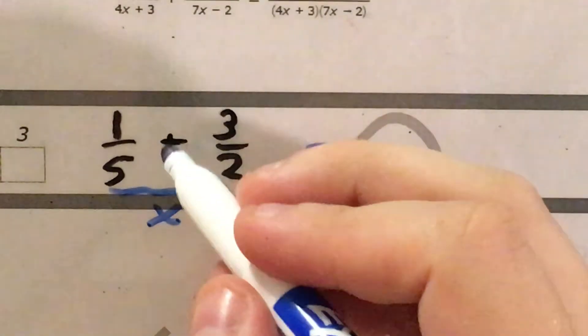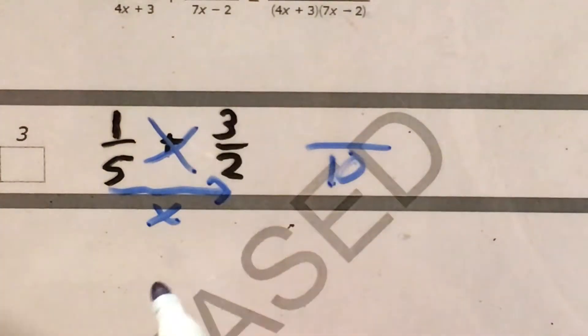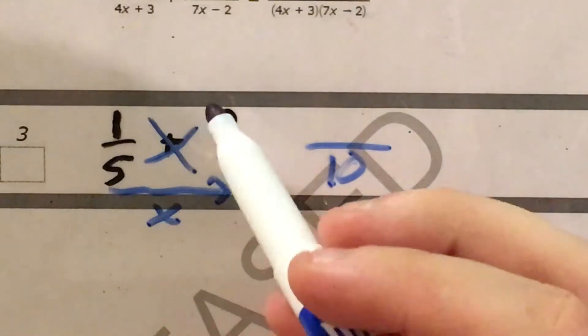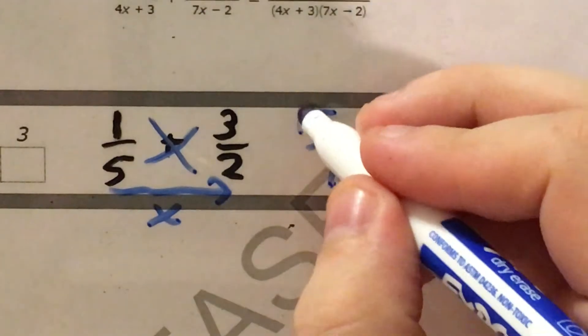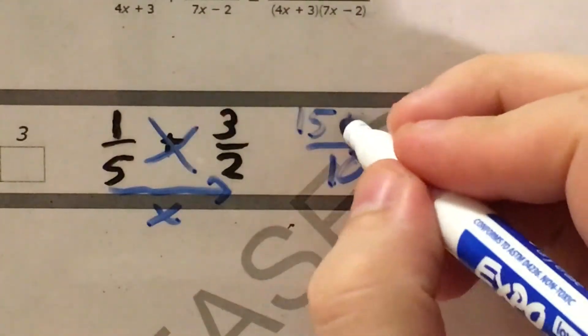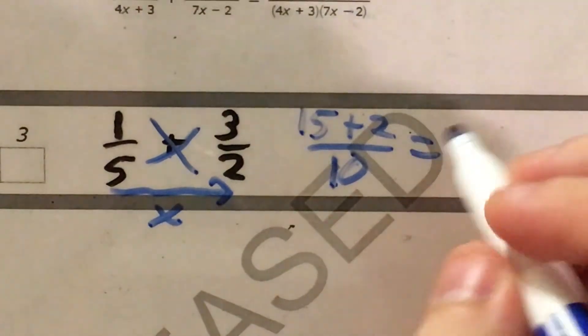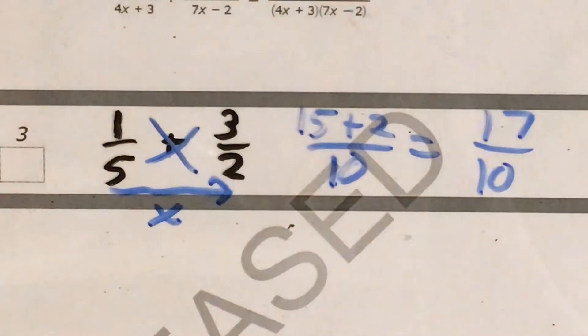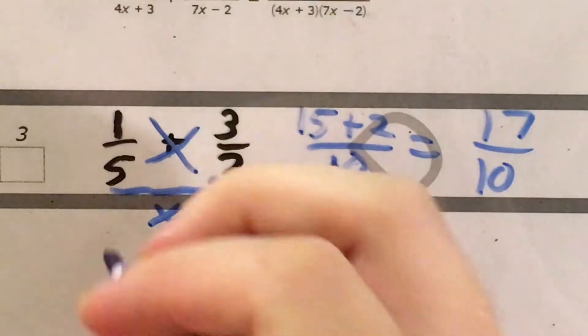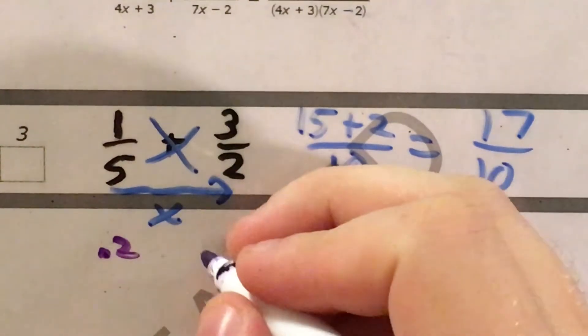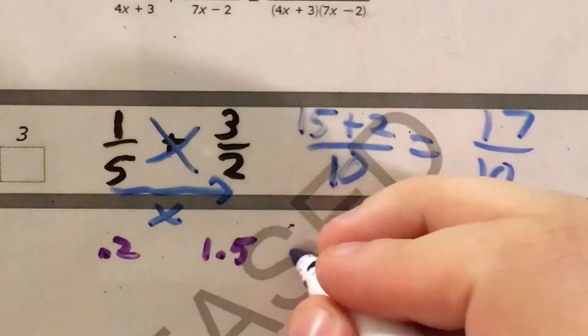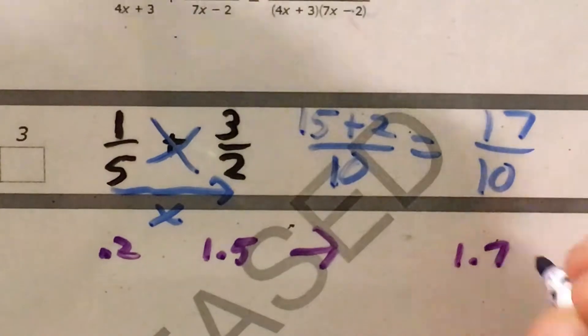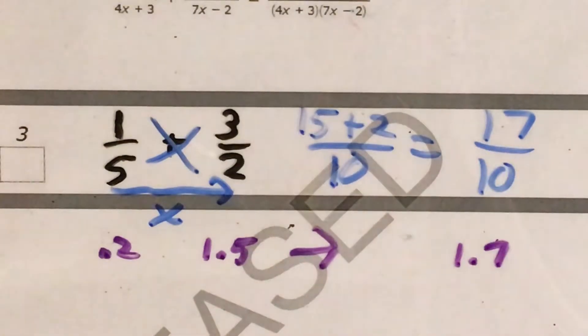And now to get my numerator, I'm actually going to cross-multiply and add. So 5 times 3 is 15, 1 times 2 is 2, 15 plus 2 is 17, so my answer is 17 tenths. And if you're inclined to do so, you can actually check me on this, but I will say that 1 fifth, if you put it in the calculator, will give you 0.2. 3 halves will give you 1.5. Add these together, you get 1.7, which is the same thing as 17 tenths.